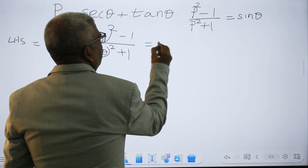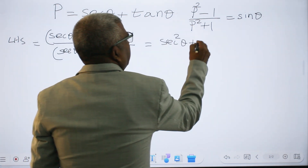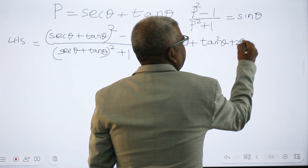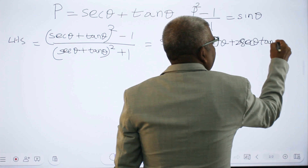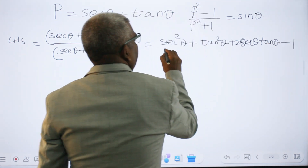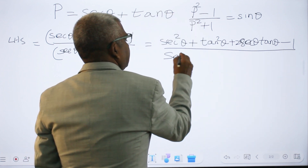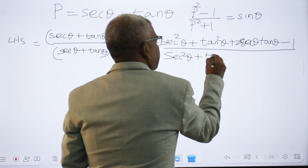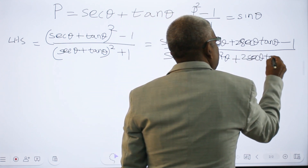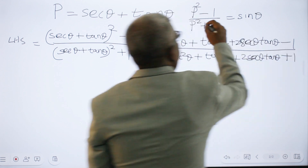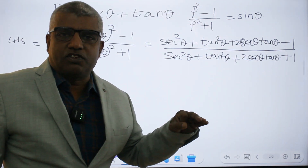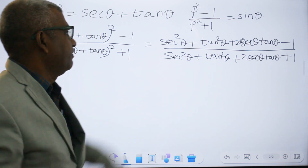Now expanding: A squared is secant squared θ, B squared is tan squared θ, and 2AB is 2 secant θ tan θ. So the numerator becomes secant squared θ plus tan squared θ plus 2 secant θ tan θ, minus 1. The denominator becomes secant squared θ plus tan squared θ plus 2 secant θ tan θ, plus 1.